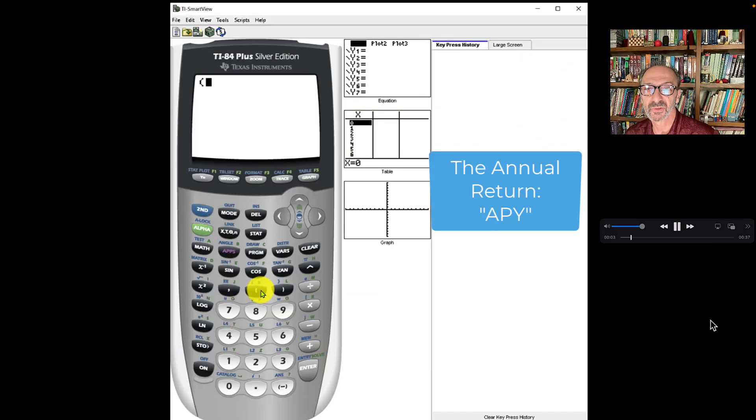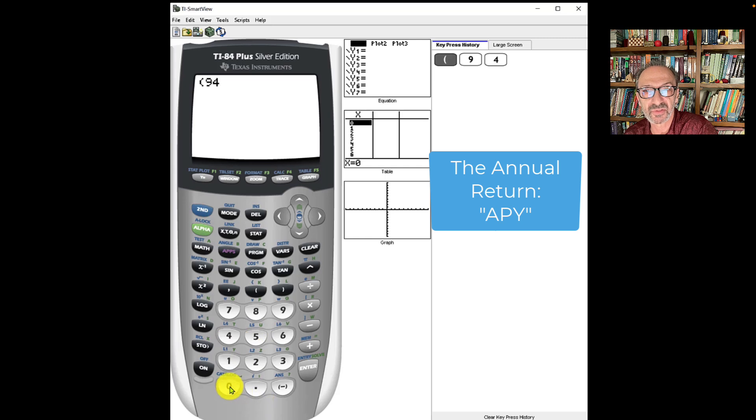For the annual return, we could just type it on a calculator, and I'll show you how. As you could see, we start with parenthesis: $9,400 divided by $6,000, close parenthesis.